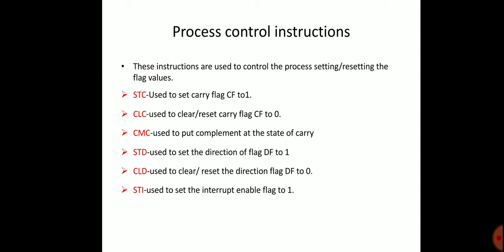Process Control Instructions are used to control the processor by setting or resetting flag values. STC sets the carry flag to 1; CLC clears the carry flag to 0, so the carry is cleared in the flag register; and CMC complements the state of the carry flag. These conditions are changed in the 8086 microprocessor program.